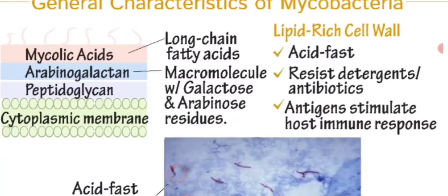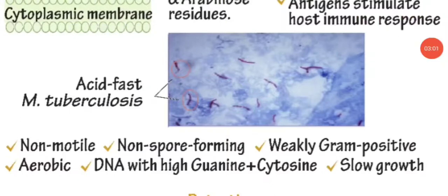Moving further outward, there is the mycolic acid layer — the outermost component of the cell wall. This is the complete structure of the cell wall of Mycobacterium tuberculosis. The mycolic acid is the most important part; it reduces the action of antibiotics. As you can see in the image, the bacteria are non-motile and acid-fast, with different cell wall layers.